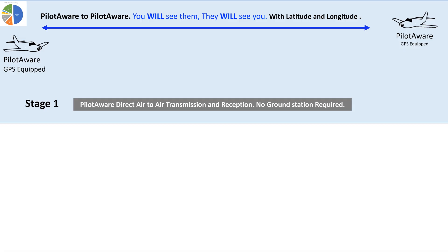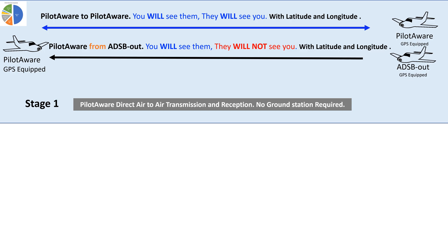Here are the aircraft that PilotAware will detect directly with no ground station involvement. Firstly, PilotAware will see all PilotAware-equipped aircraft and they will see you — as a target with a GPS location, just like any modern system. Secondly, PilotAware will see all aircraft transmitting ADS-B out, also as a target with a GPS location that can be plotted on a screen or flight bag. The ADS-B equipped aircraft will not detect you.